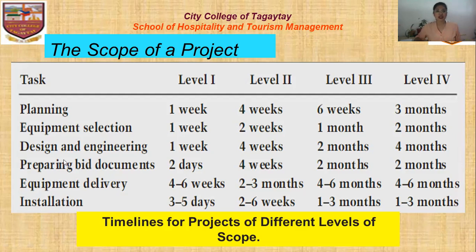For design and engineering activities: Level 1 is one week, Level 2 is four weeks, Level 3 is two months, and Level 4 is four months.